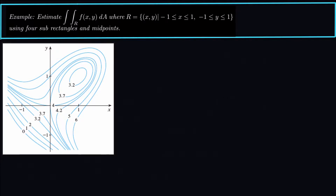Hey guys, what's up today? We're looking at estimating a double integral using the contours or the level curves of the function. We have this double integral of a function given by contour lines, and we want to integrate this over the rectangle with x between negative 1 and 1, y between negative 1 and 1, using four sub-rectangles and midpoints.